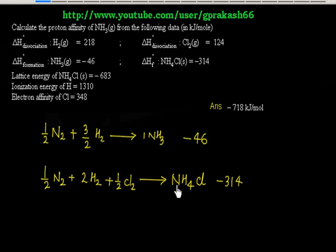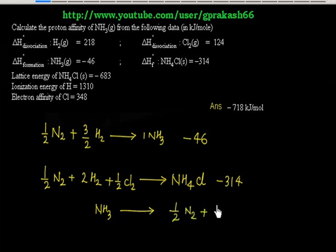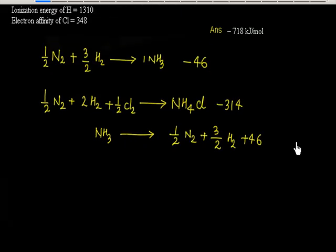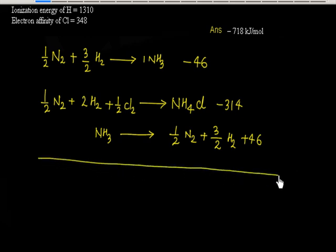Now if I reverse the first reaction, I want to cancel N2. So reversing the first reaction gives: NH3 goes to half N2 plus 3/2 H2, and the sign changes from minus to plus 46. Now if I add these two reactions, let us see what happens.